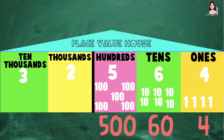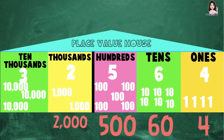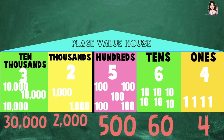How about the digit 2 at the thousands place? Here, we have 2 thousands. Count with me: 1,000; 2,000. So the value of digit 2 at the thousands place is 2,000. How about the value of digit 3 at the ten thousands place? We have 3 ten thousands. Count with me, children: 10,000; 20,000; 30,000. So the value of digit 3 at the ten thousands place is 30,000. These are the values of digits in 32,564.